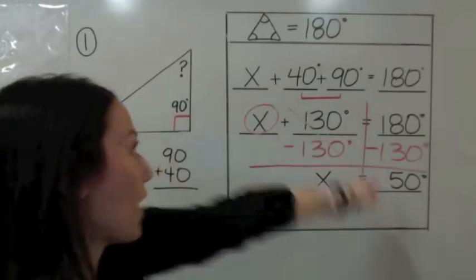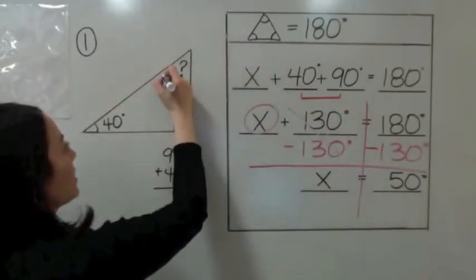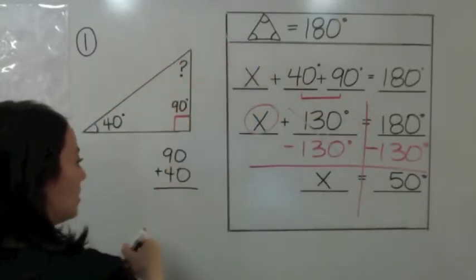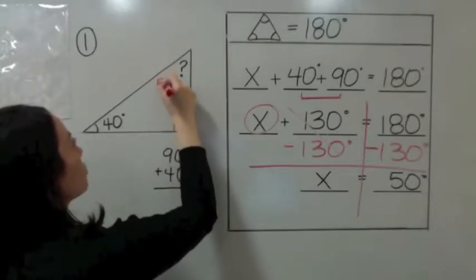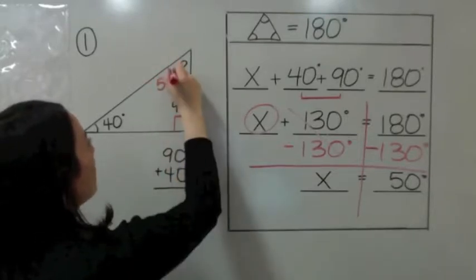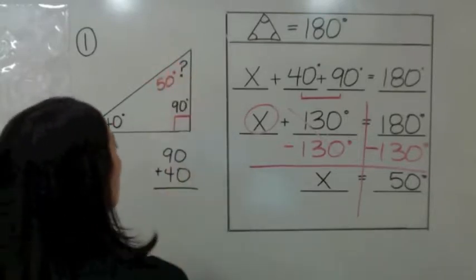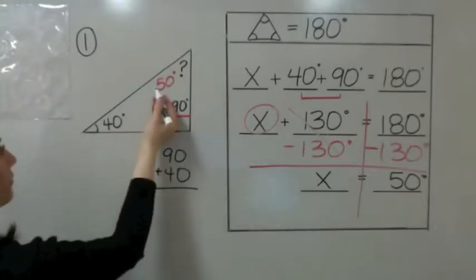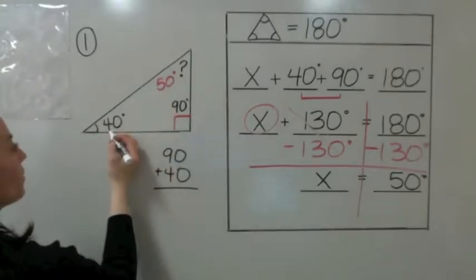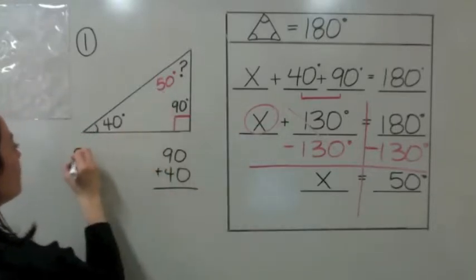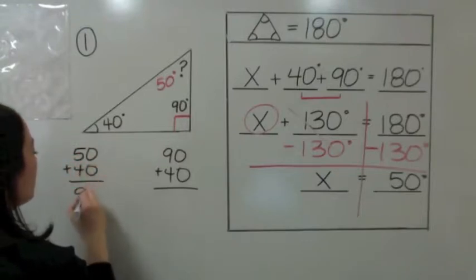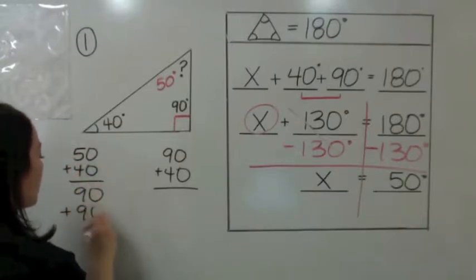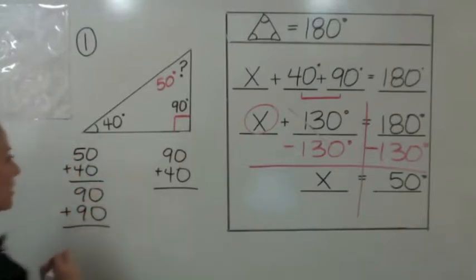Come back to the triangle and write that this is 50 degrees. That makes sense because if we add them all together: 50 plus 40 plus 90 — well, 50 plus 40 is 90, plus 90 is 180.